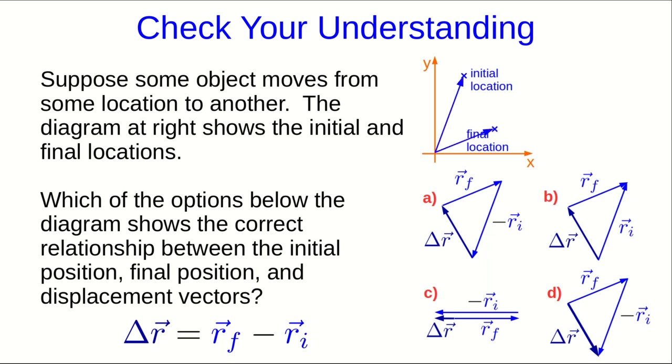So there are the initial and final position vectors. And if we move the final position vector down onto the picture, we see it's there. And the initial position vector needs to be flipped end for end because we need negative delta r_i, and then there it is in the diagram. And so, d is correct.